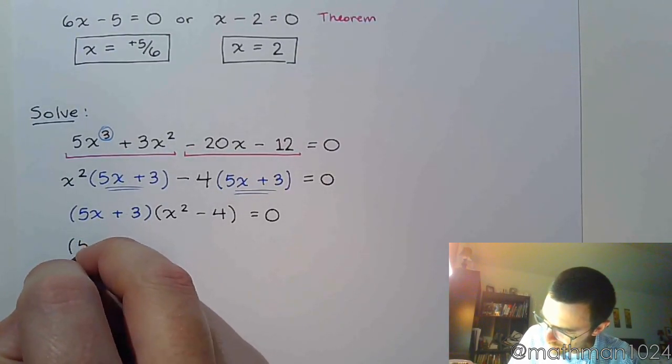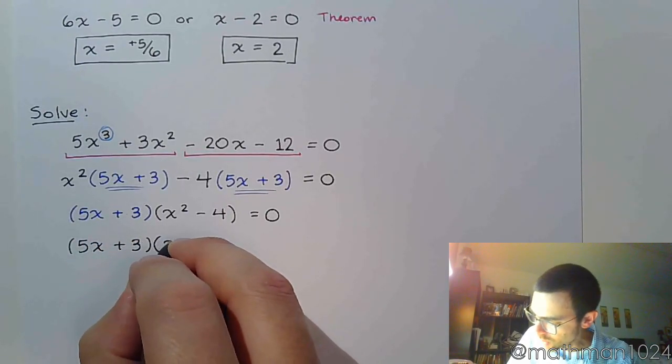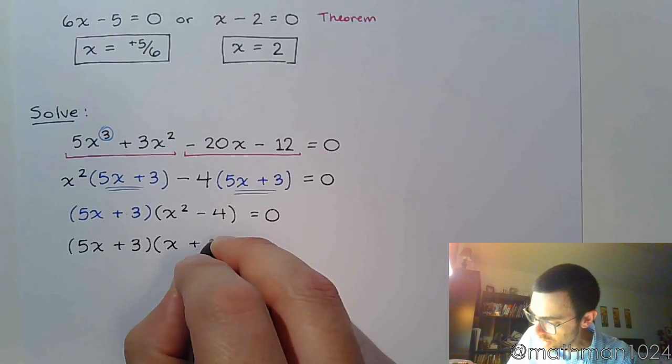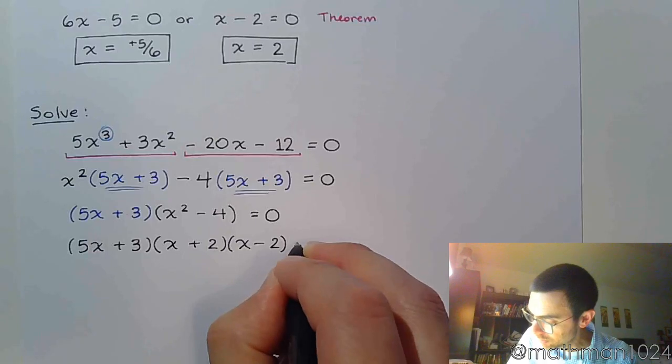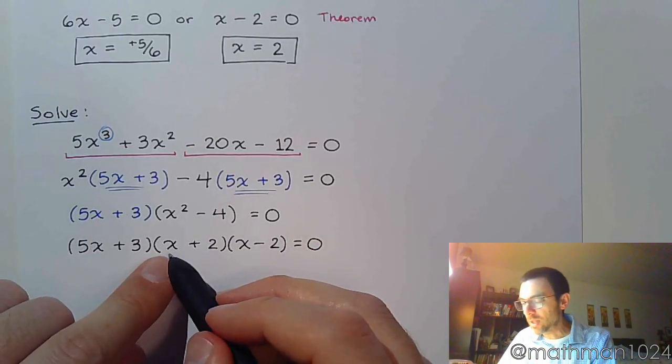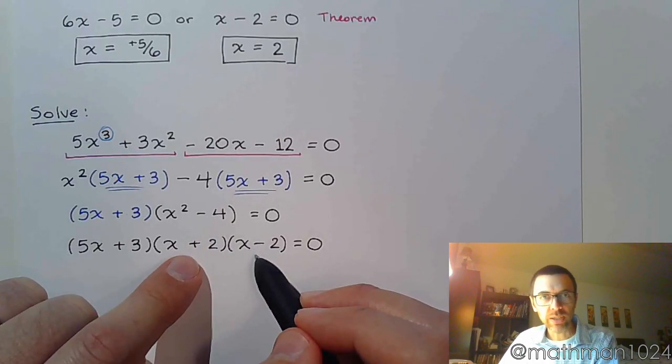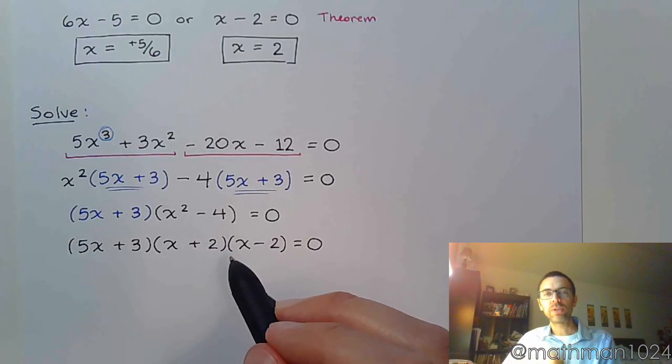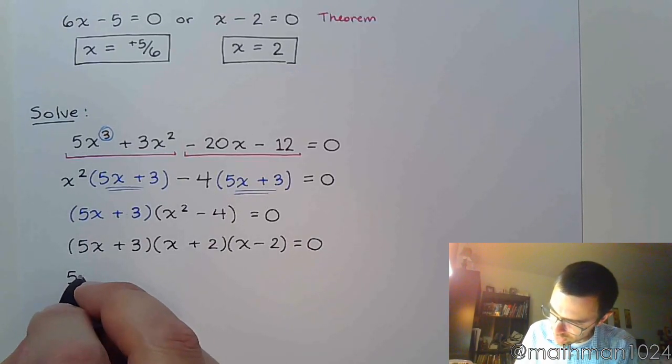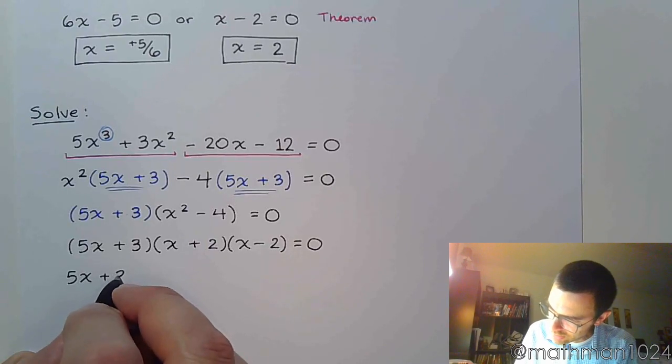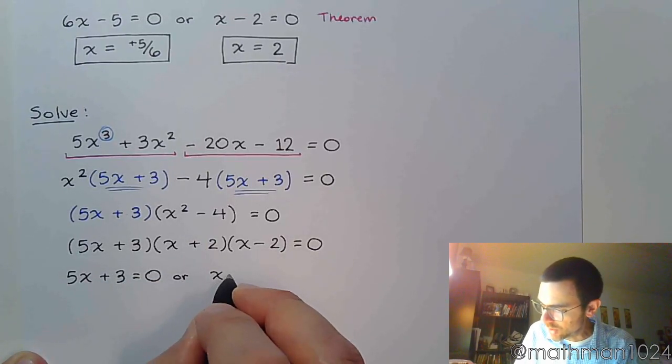We remember that this is the difference of squares, and the difference of squares will break down as (x + 2) and (x - 2) for this example. You would square x to get x², you'd square 2 to get 4, so you split that up into the product of these conjugates, x + 2 and x - 2. And then using the zero factor theorem, you would set each of these factors equal to zero and solve.